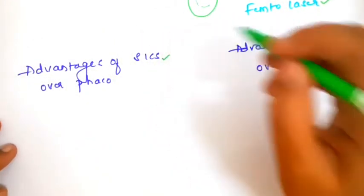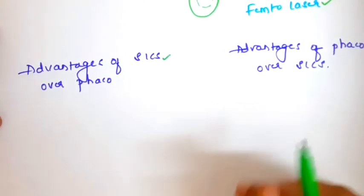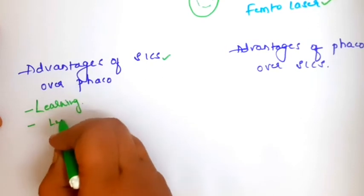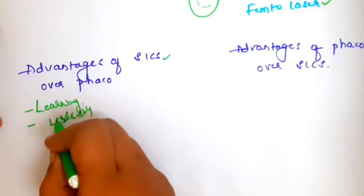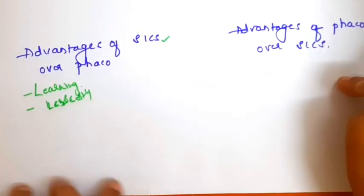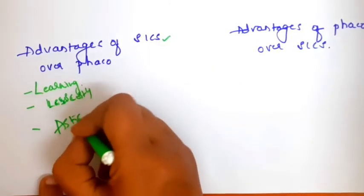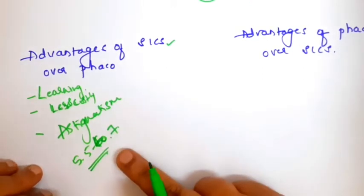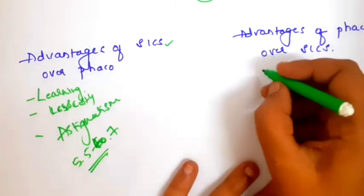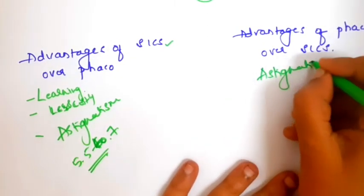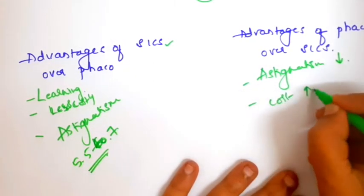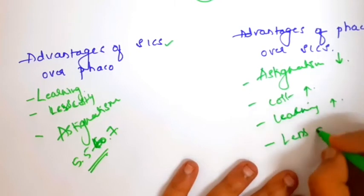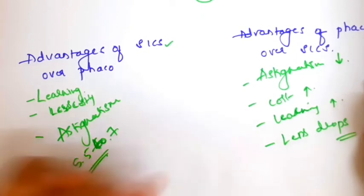The advantages of small incision cataract surgery over phacoemulsification: the learning curve is very short and most ophthalmologists are well versed with SICS. The instruments are less costly, making it suitable for bulk surgeries like camps. The disadvantage of SICS is it induces some astigmatism, because the 5.5 to 7mm sclerocorneal tunnel leaves behind astigmatism once it heals. Phacoemulsification has no or very minimal astigmatism, but the cost of the machine is high, the learning curve is steep, and complications like lens drop are difficult to manage.